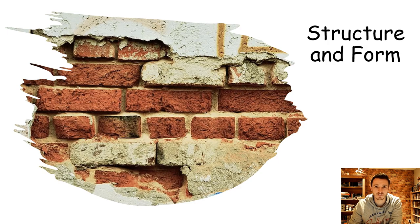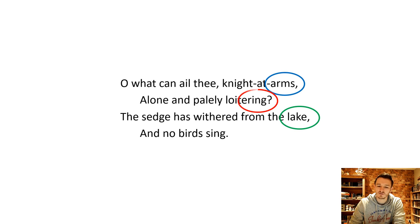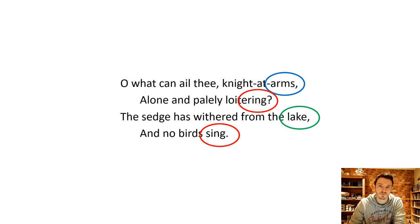Before we start delving into language analysis, it's important to look at structure and form. This is a different form to what we've seen before. Looking at the first stanza, we can see that arms and lake don't rhyme with anything, but loitering and sing do rhyme. This rhyme scheme continues all the way through — it's A, B, C, B. There are different versions of ballads: sometimes A, B, A, B or A, A, B, B. What Keats decided to do was use the A, B, C, B rhyme scheme sustained all the way through this particular ballad.